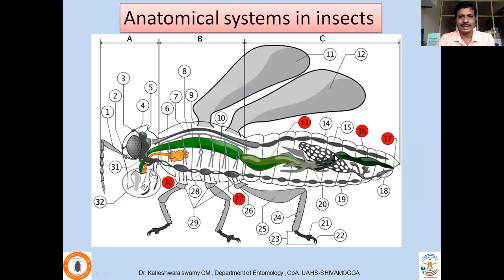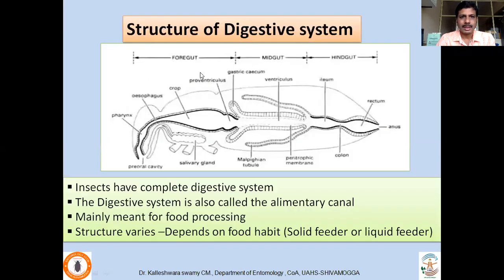The digestive system is located centrally in the haemocoel — the body cavity — almost in the middle part. Other anatomical systems found in the insect body include the circulatory system, the nervous system, and the reproductive structures, as you can see here. A pair of salivary glands is also present which aids in the digestive process. The digestive system is a complete tubular structure running from mouth to anus, also called the alimentary canal.